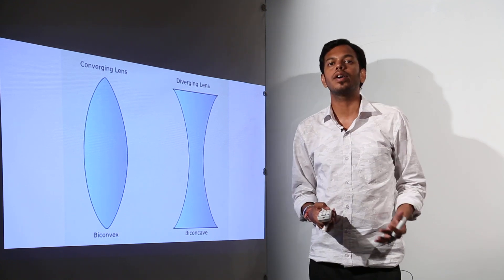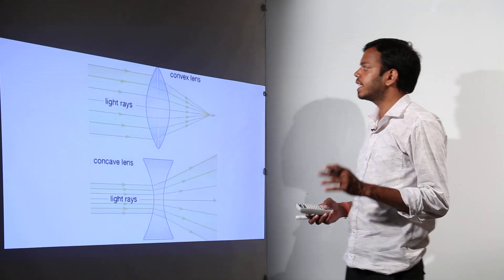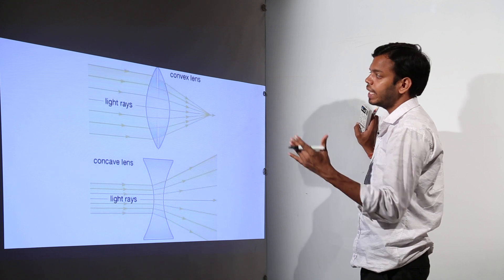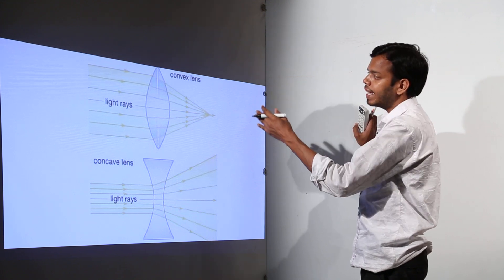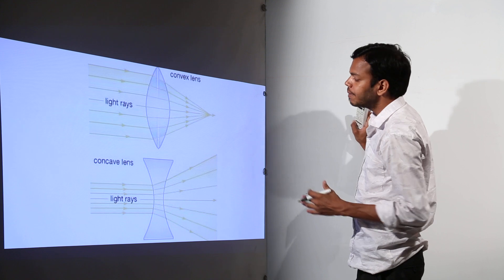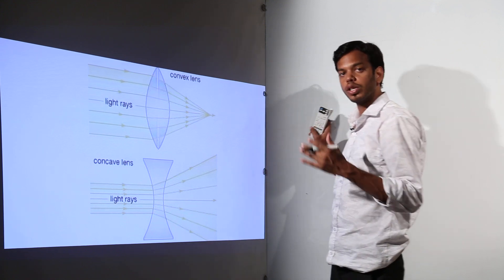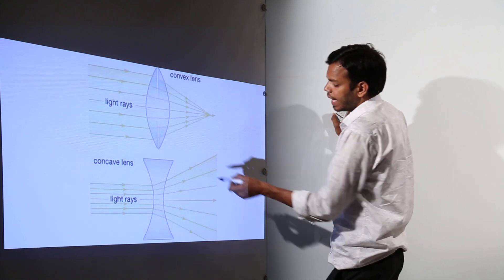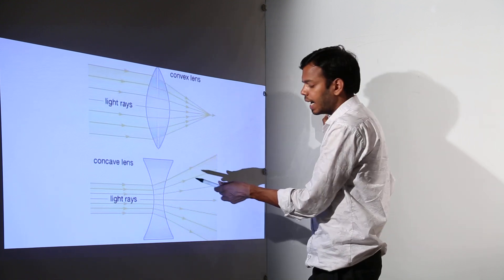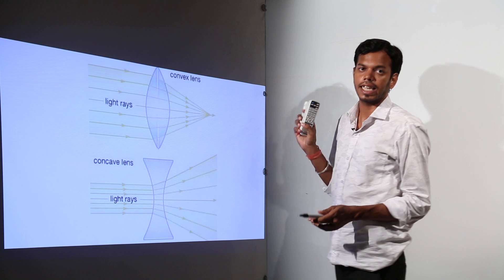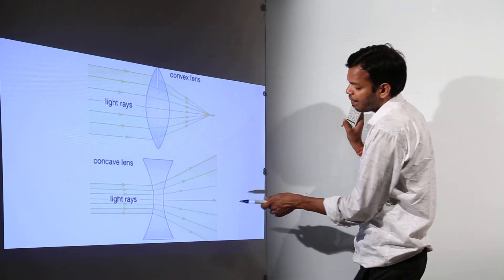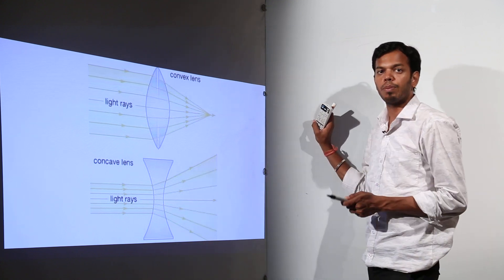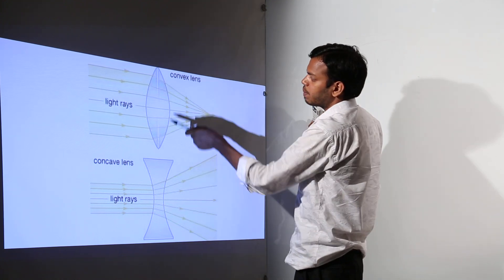Why are they called converging and diverging lenses? That is because a convex lens converges all the light rays coming parallel towards the lens to a single point. Whereas the concave lens does the same but in the opposite manner — the light rays coming parallel get diverged in different directions, they get split up. But if you extend them backwards, they will be meeting at a single point.